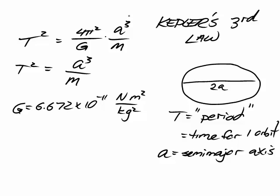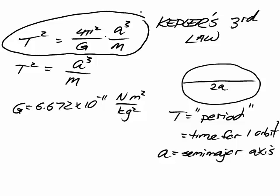...and you come up with Kepler's third law in its full, glorious form: T squared equals 4π squared over G times a cubed over m. a is the semi-major axis, m is the mass of the thing you're orbiting around, which in the case of planets is the Sun, and big G is Newton's universal constant of gravitation.